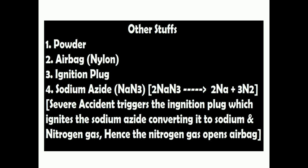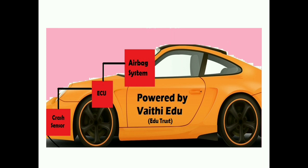To give a quick recap: the crash sensor detects the crash and sends input to the ECU. The ECU evaluates the accident, then gives control to the airbag inflate system. The circuit closes, positive and negative voltage reaches the sodium azide, which produces nitrogen gas and sodium. The nitrogen gas blows the nylon bag — the airbag — which saves human lives. This entire process should be completed within 0.25 seconds in a modern car.